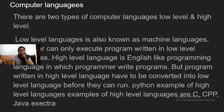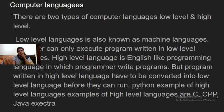About computer languages, there are two types: low level and high level. Low level language is also known as machine language. It is written for machine purpose. The computer can only execute programs written in low level language.